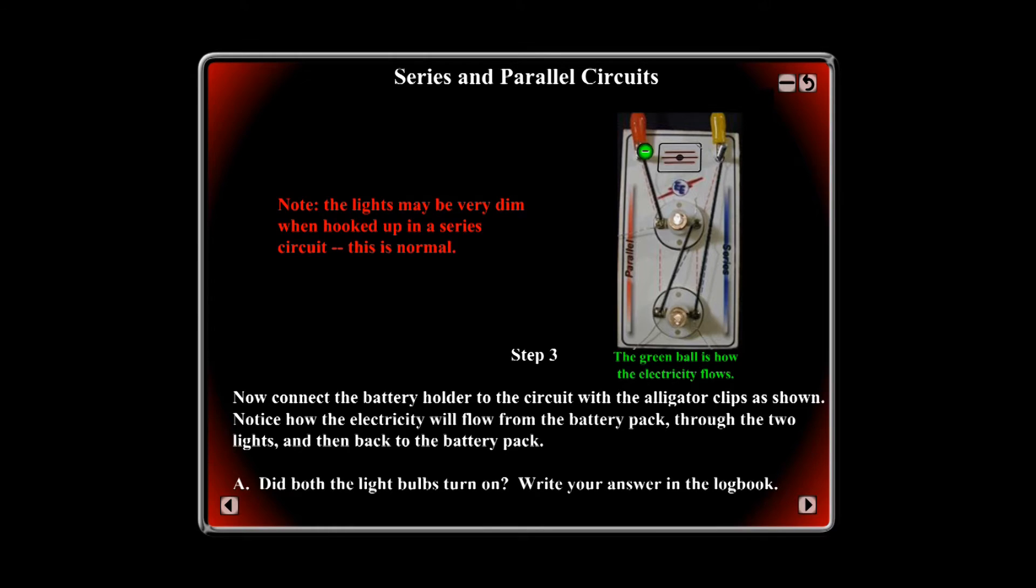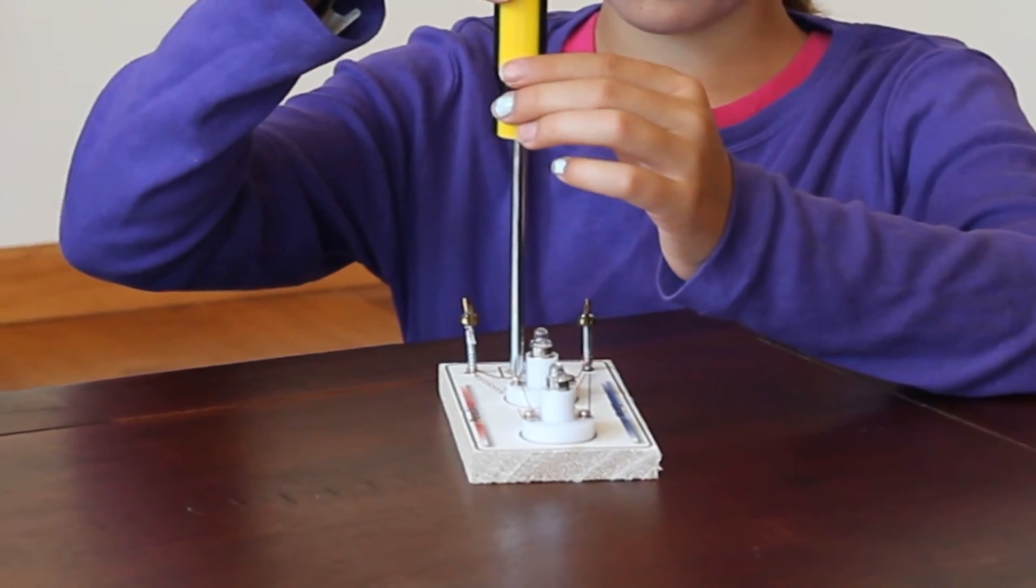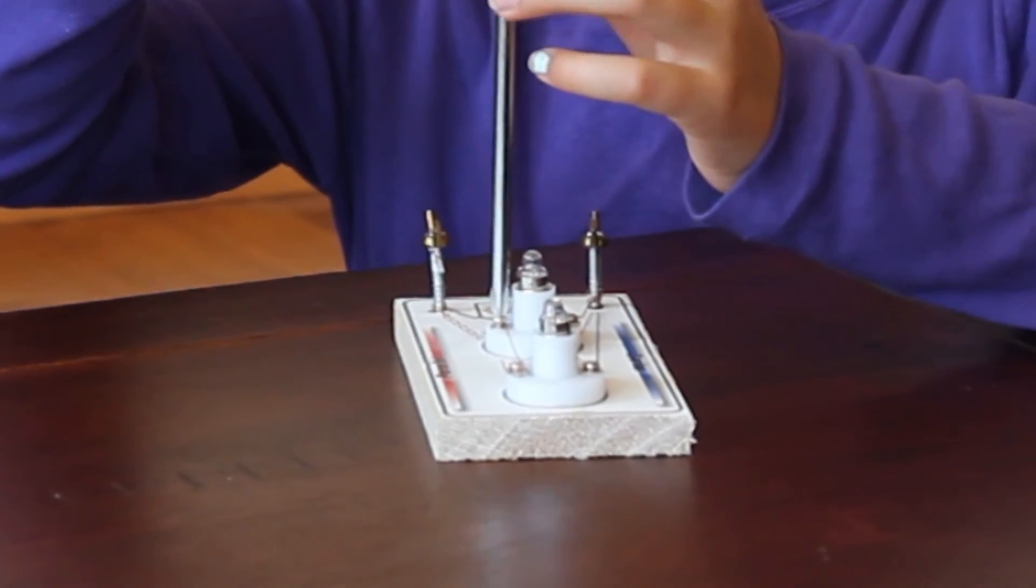In this experiment, they will take their circuit and set it up as a series circuit, take out a bulb, and write down what happens. Later, they will set it up as a parallel circuit, repeat the experiment, but with a different result.